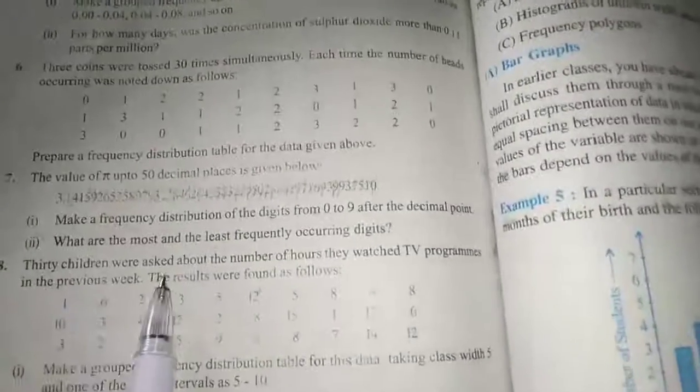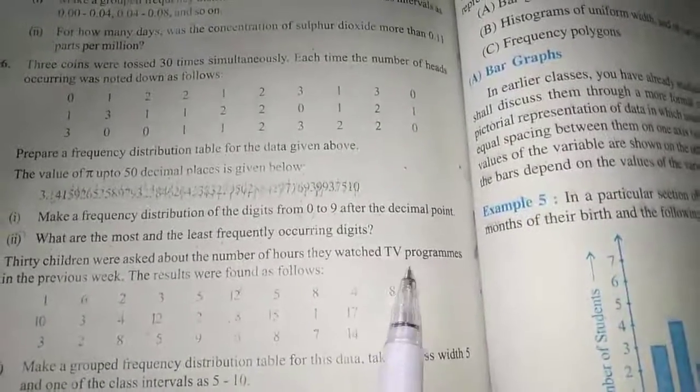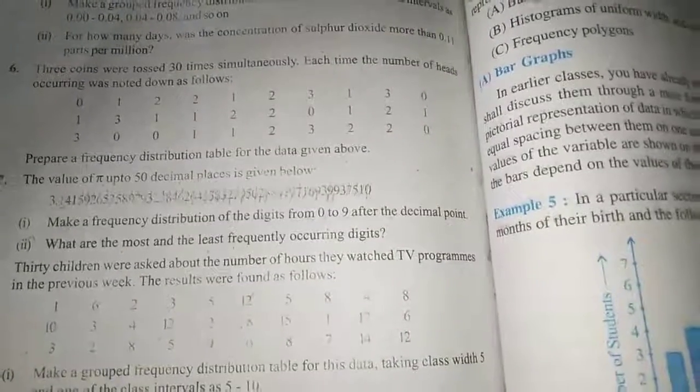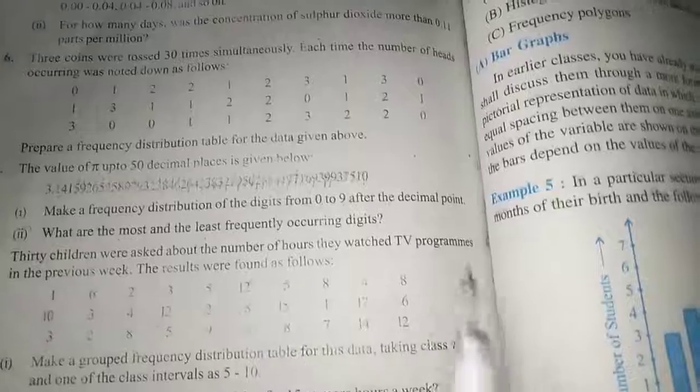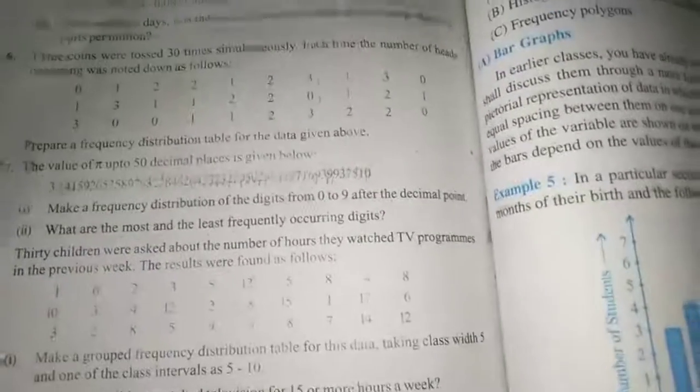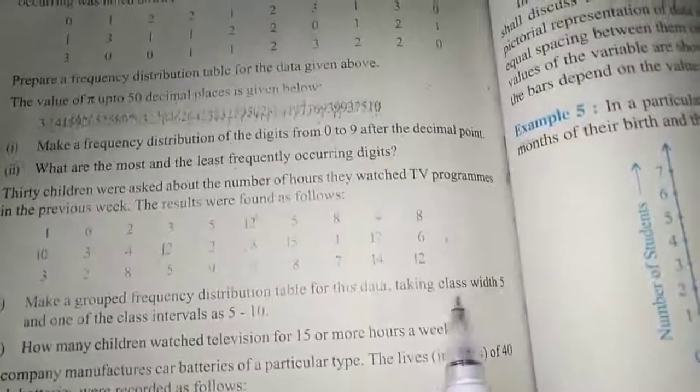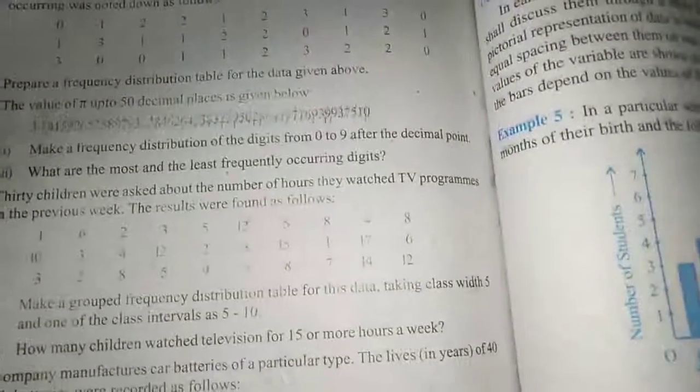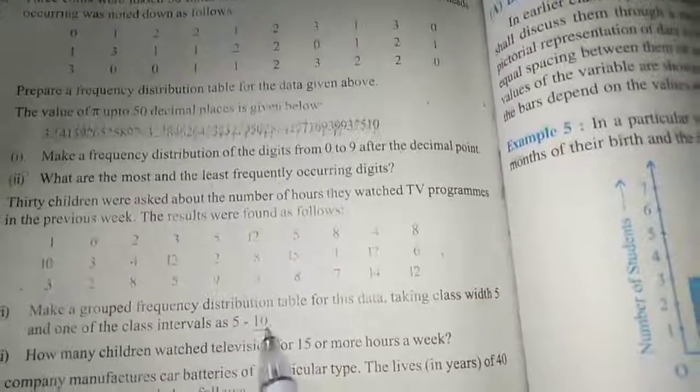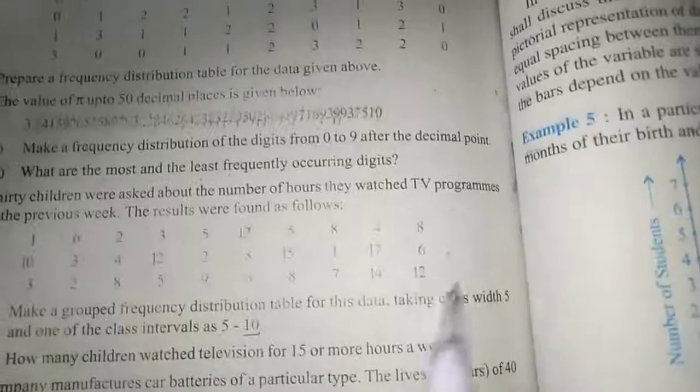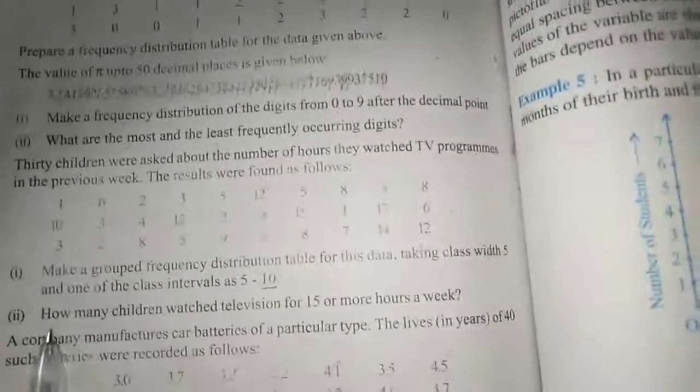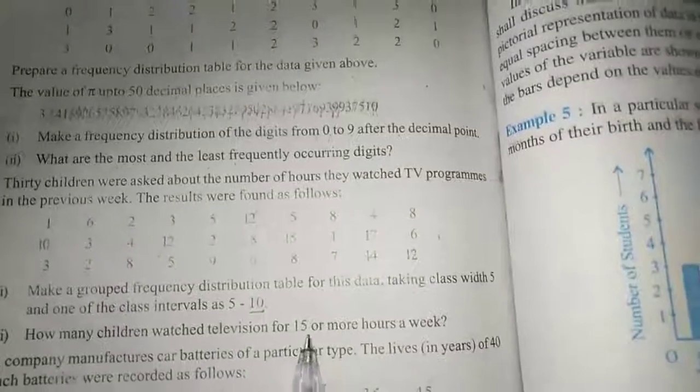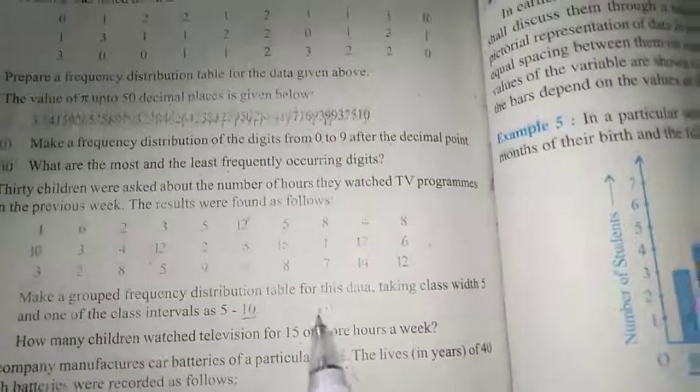Now we will move to the eighth sum. Thirty children were asked about the number of hours they watched TV programs in the previous week. The results were found as follows. Make a grouped frequency distribution table for this data, taking the class width of five, and one of the class intervals is 5 to 10. This is the homework for you. See how many children watch television for 15 or more hours a week.